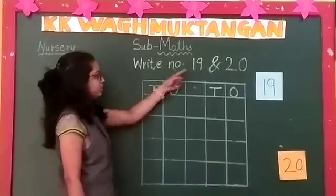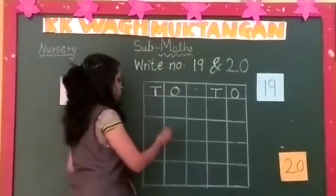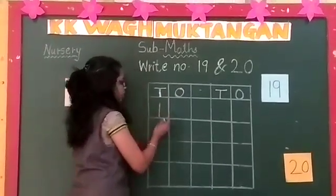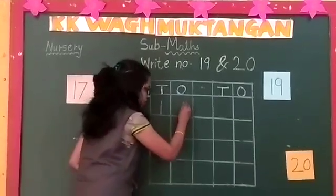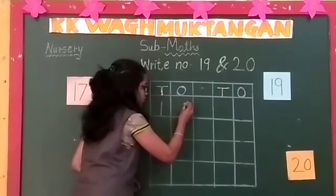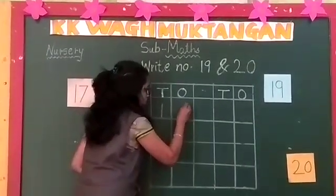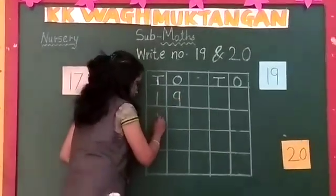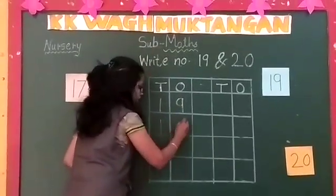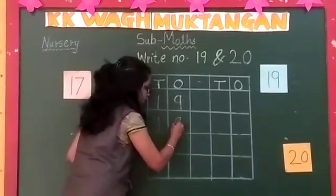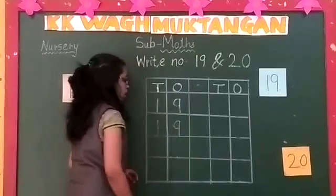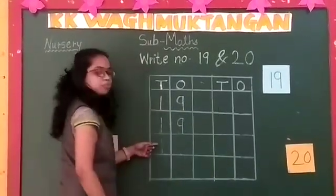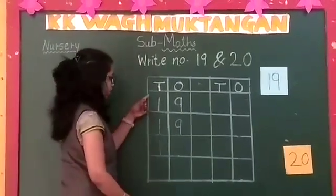For number 19, you have to write number 1 in the 10's column and number 9 in the 1's column. 10 and 9, 19. How to write number 1 — standing line. This is number 1 in the 10's column.